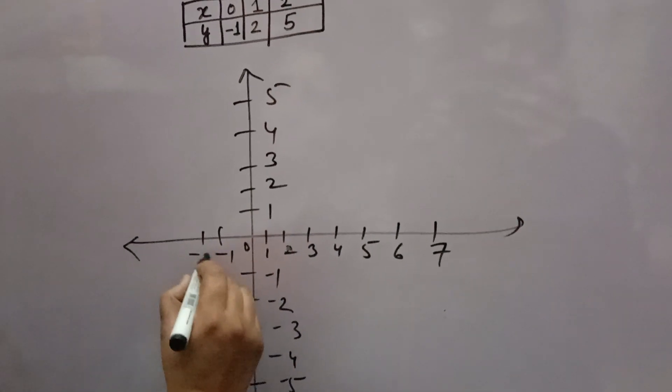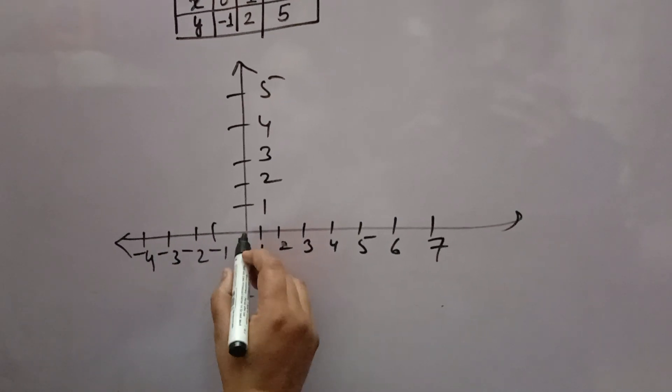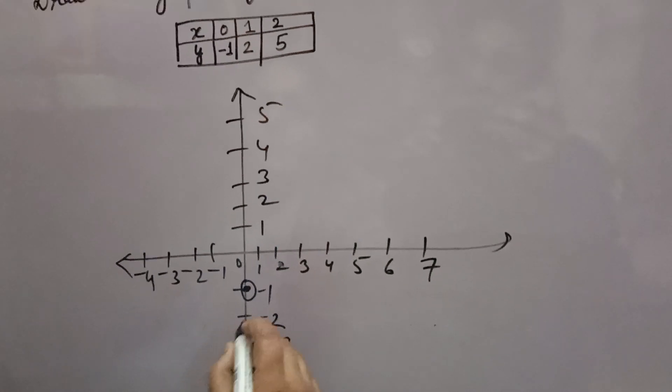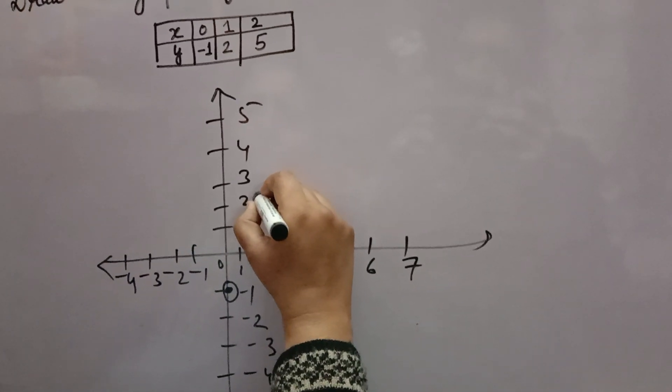Like this: x is 0, y is minus 1, one point will come here. X is 1, y is 2, one point will come here.